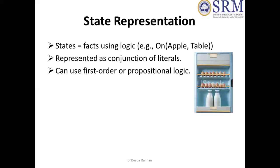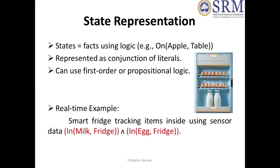If you have a sensor in the fridge, we can use Wi-Fi. If you have a fridge, there is milk or eggs inside. How do we represent this? Milk is in the fridge — correct. Egg is in the fridge — correct. Then both are true, and they are AND-connected. If you have a state — a snapshot of the current time — everything that is true forms a conjunction. Conjunction means AND, so everything is true.